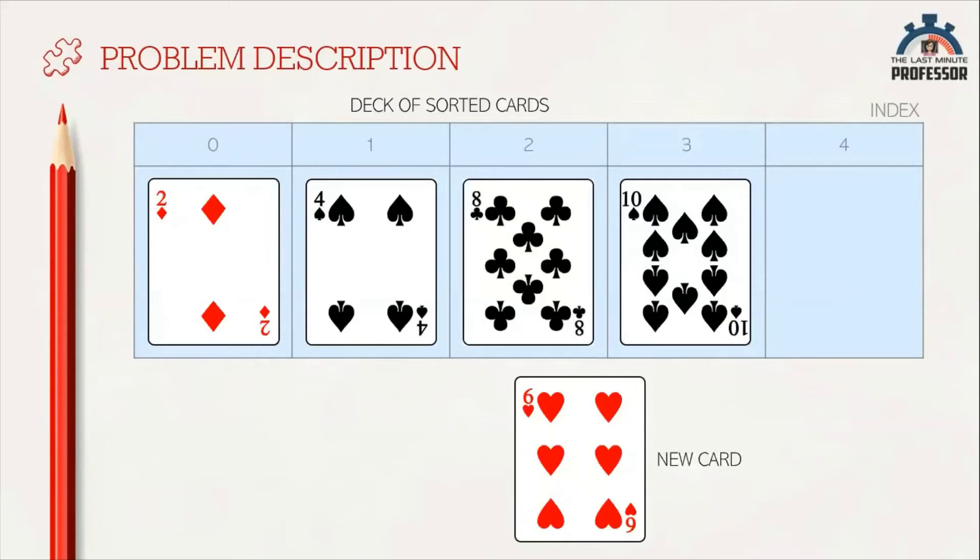When I find out that the new card 6 has to be inserted at index 2, I cannot directly insert it. If I do so, I will miss the value at that index. That is, the value 8 will get lost.